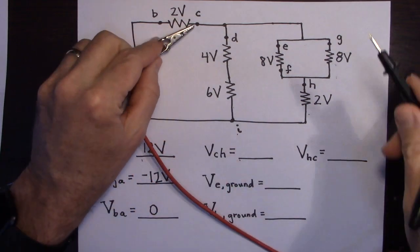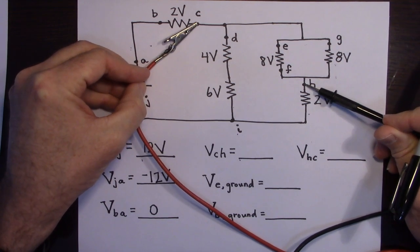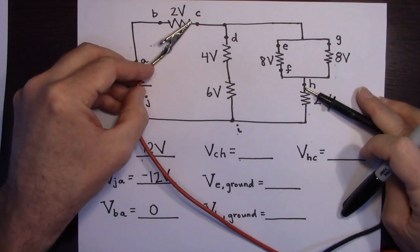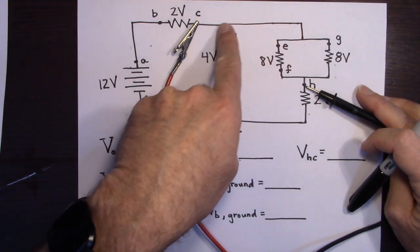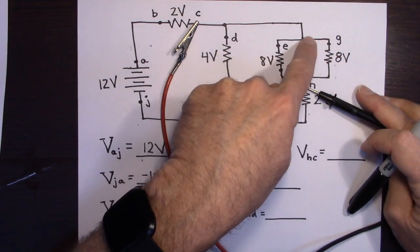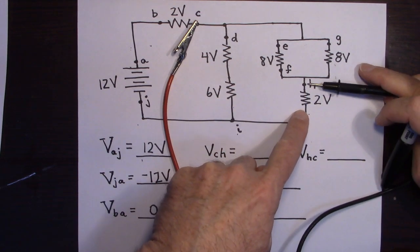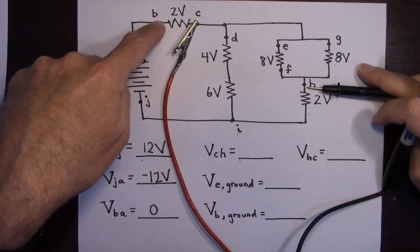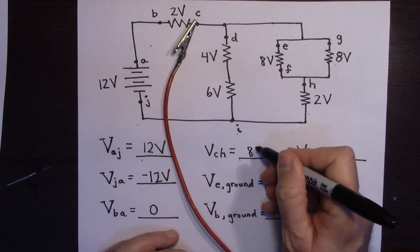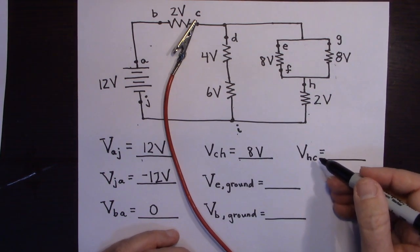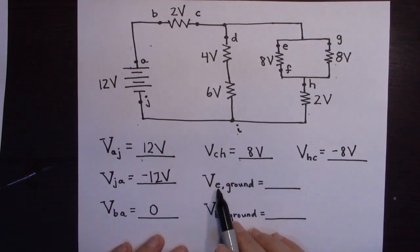For the voltage at C with respect to H, I put my red end at C and black end at H. If I'm in the mall going from H to C, I could go this way and walk up 8 steps — so C is 8 volts higher. I could also go the long way around: down 2 steps, up 12, then down 2 more — that's still 8 steps higher. So the voltage at C with respect to H is 8 volts, and H with respect to C is negative 8 volts.